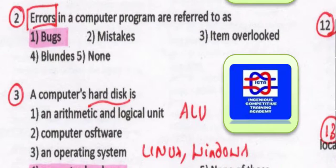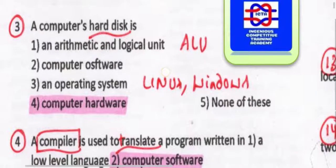A computer hard disk is a computer hardware. It is one type of hardware; it is not software. Whatever we can touch is hardware. Next, we have arithmetic logic unit — that is for mathematical calculation purposes.